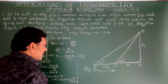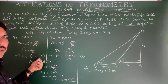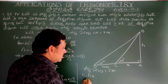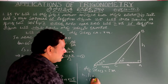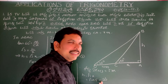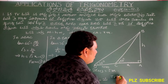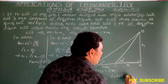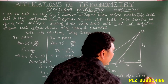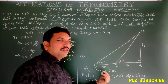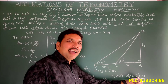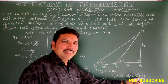Substituting x equals 5 into equation 1: h equals root 3 times x, so h equals root 3 times 5, which equals 5 root 3. Therefore TV tower height equals 5 root 3 meters, and road distance equals 5 meters. Is it clear?